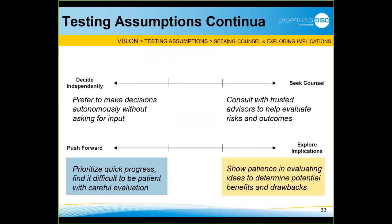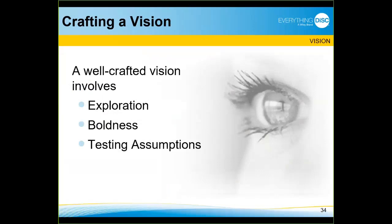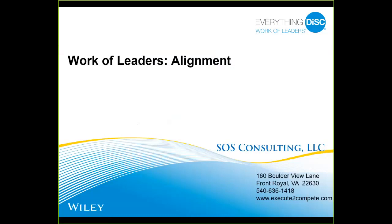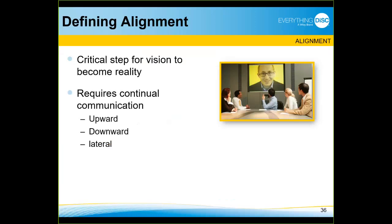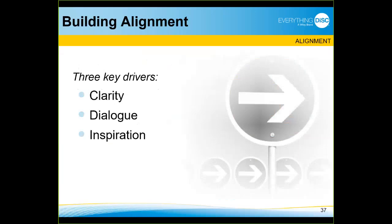So crafting a vision involves exploring — being open to new ideas — taking risks, being bold, and testing assumptions. The second step is building alignment around that vision. That's the critical step for turning vision into reality. It requires continual communication upwards, downwards, and across the organization — it's not a one-time activity. The three drivers are clarity, dialogue, and inspiration.